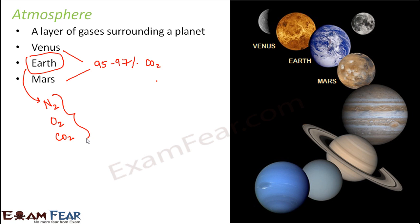Besides that, the atmosphere acts as a blanket that protects the Earth from many harmful radiations coming from outer space, such as harmful radiations from the Sun or from other celestial objects.